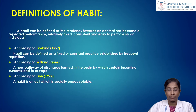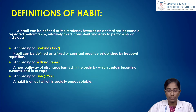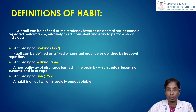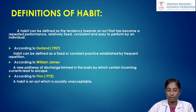According to Dorland in 1957, a habit can be defined as a fixed or constant practice established by frequent repetition. According to William James, it is a new pathway of discharge formed in the brain by which certain incoming currents lead to escape. Finn in 1972 put forward the most concise definition: a socially unacceptable behavior is called a habit.